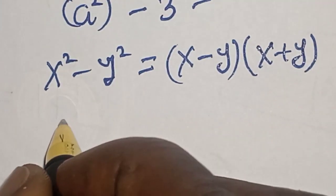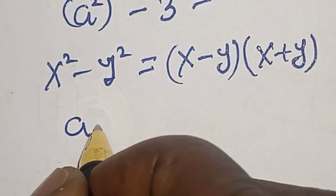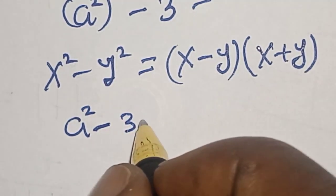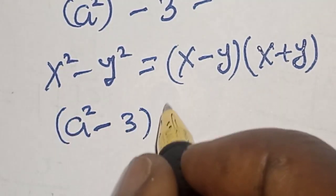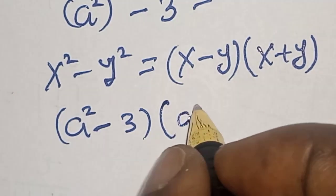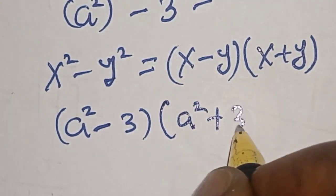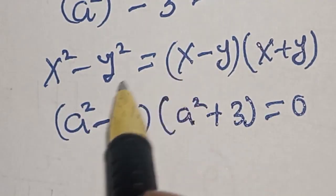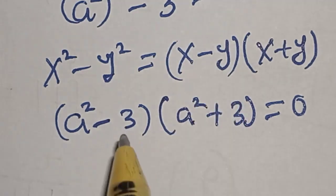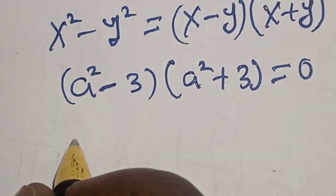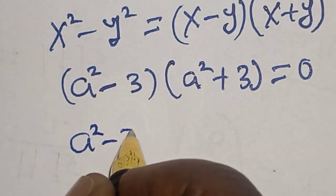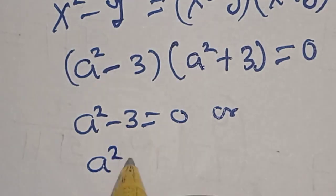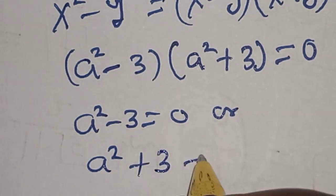Now, a squared minus 3, multiplied by a squared plus 3, is equal to 0, because s here is a squared and y is 3. We have two cases here. That is, a squared minus 3 is equal to 0, or a squared plus 3 is equal to 0.